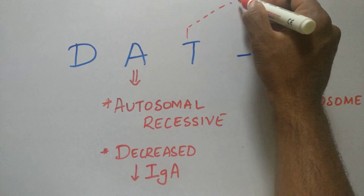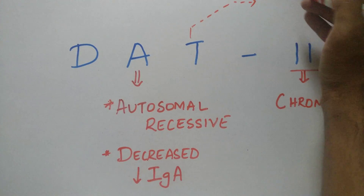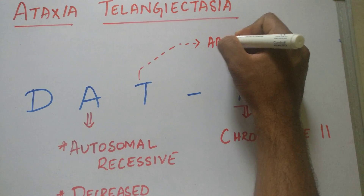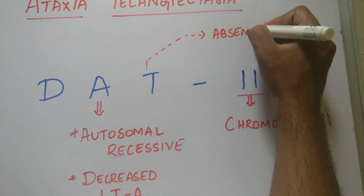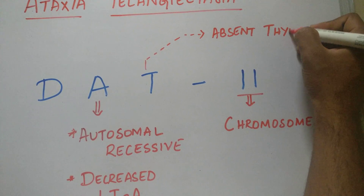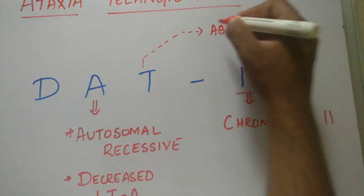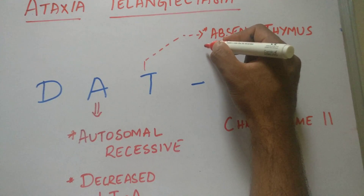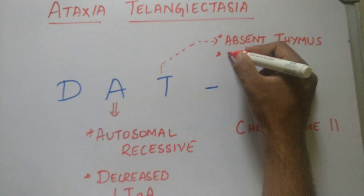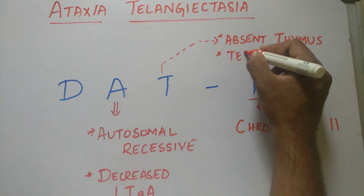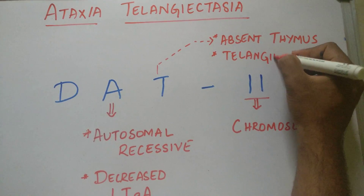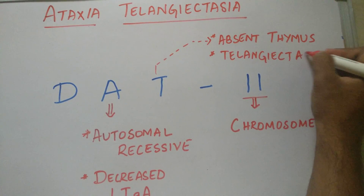T stands for absent thymus — the thymus gland is absent. At the same time, T also means presence of dilated vessels, that is Telangiectasia.